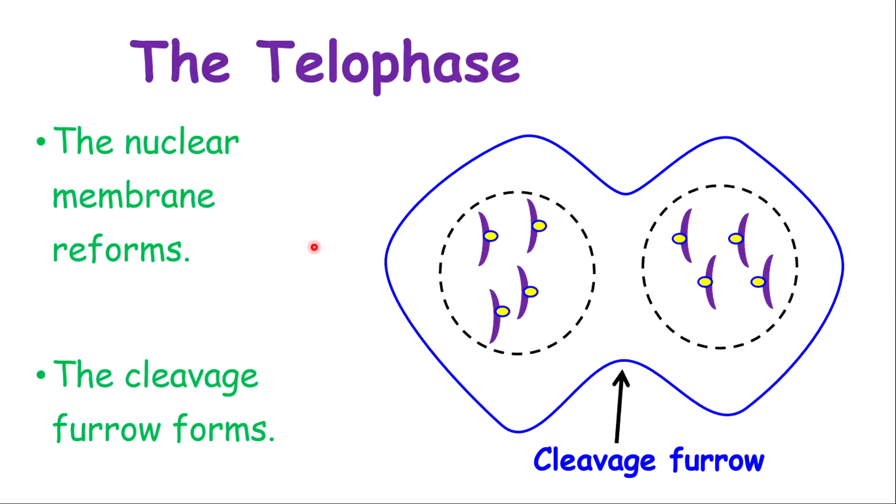The next phase is known as the telophase. You can think about the T as being teleporting. The nuclear membrane will reform. The purpose for this is to make sure that these chromatids that are on the opposite side of the cells will be contained on that side. If there is no nuclear membrane, everything will be scattered, confused, and mixed up all over the cell. What they have forming now is the cleavage furrow, the point where the cytoplasm will start to divide.